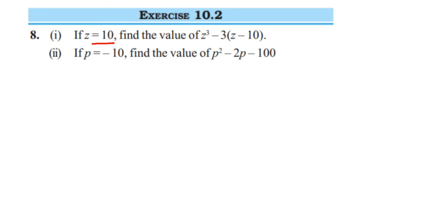We have to find out the value of this expression, so the expression here is z cube minus 3 into z minus 10. In place of z, you just put 10 and get the value. Let me write down z once again, so this is z minus 10. In place of z, put z is equal to 10.